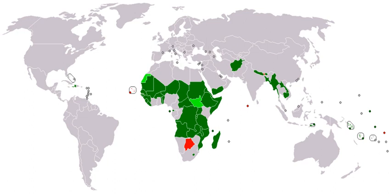According to UN Habitat, around 33% of the urban population in the developing world in 2012, or about 863 million people, lived in slums. The proportion of urban population living in slums was highest in Sub-Saharan Africa, followed by South Asia, Southeast Asia, and East Asia. UN Habitat reports that 43% of urban population in developing countries and 78% of those in the least developed countries are slum dwellers.